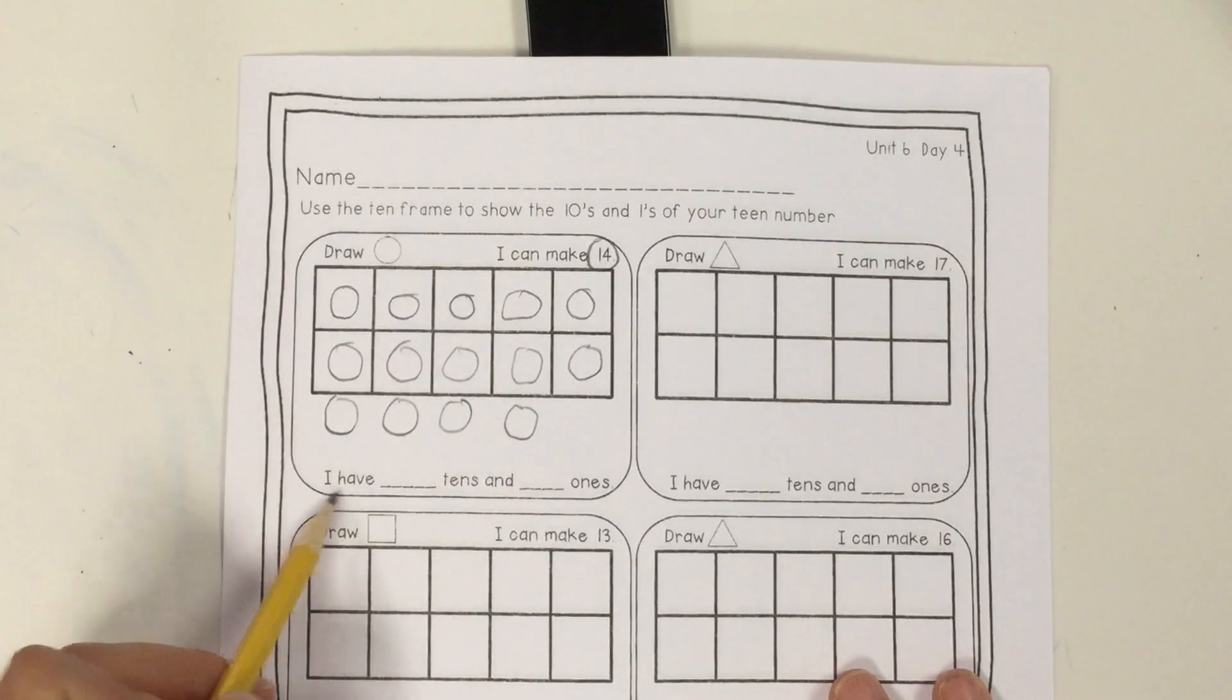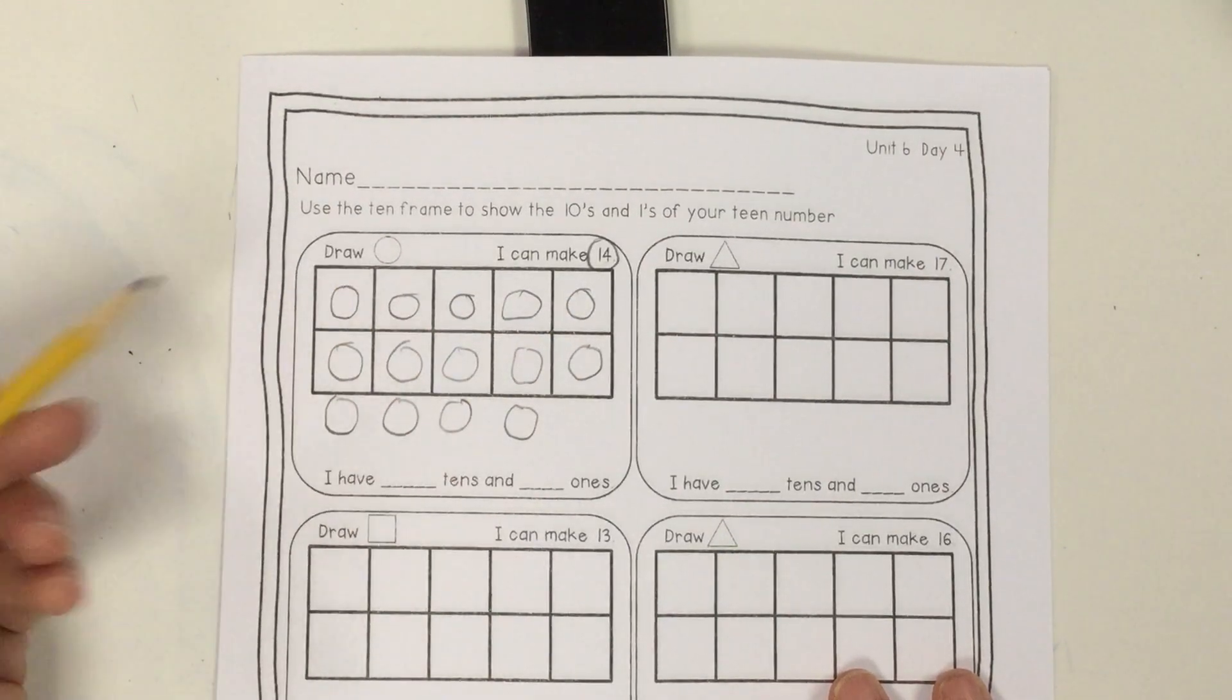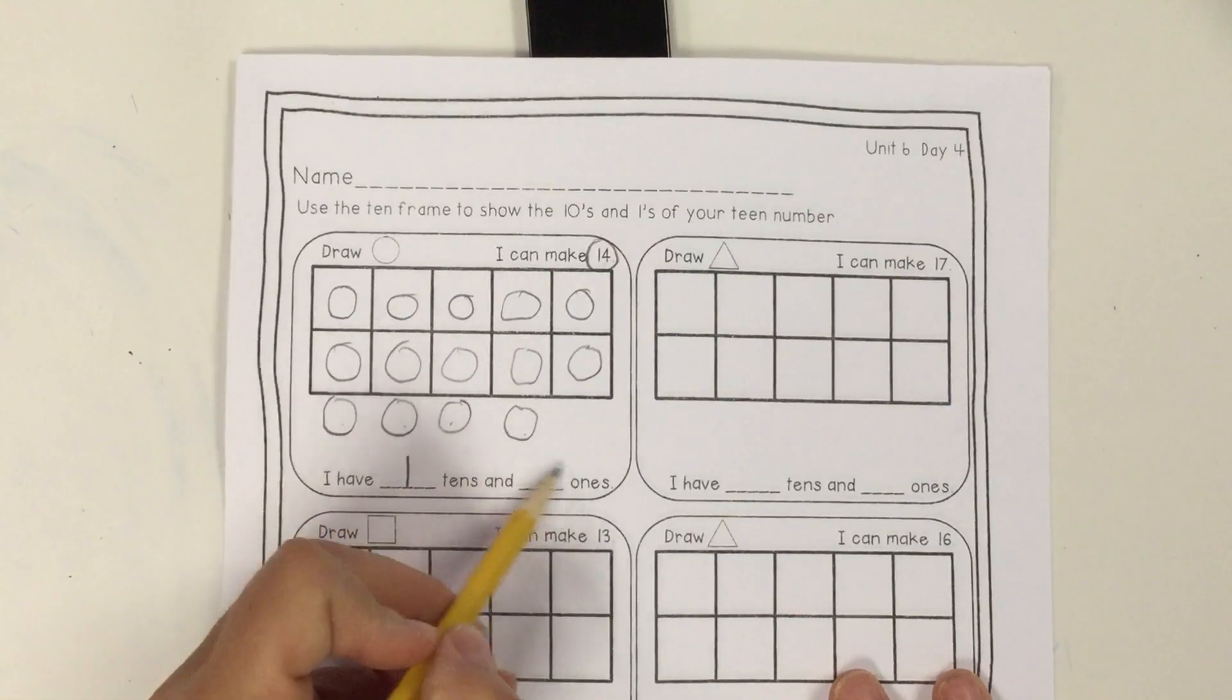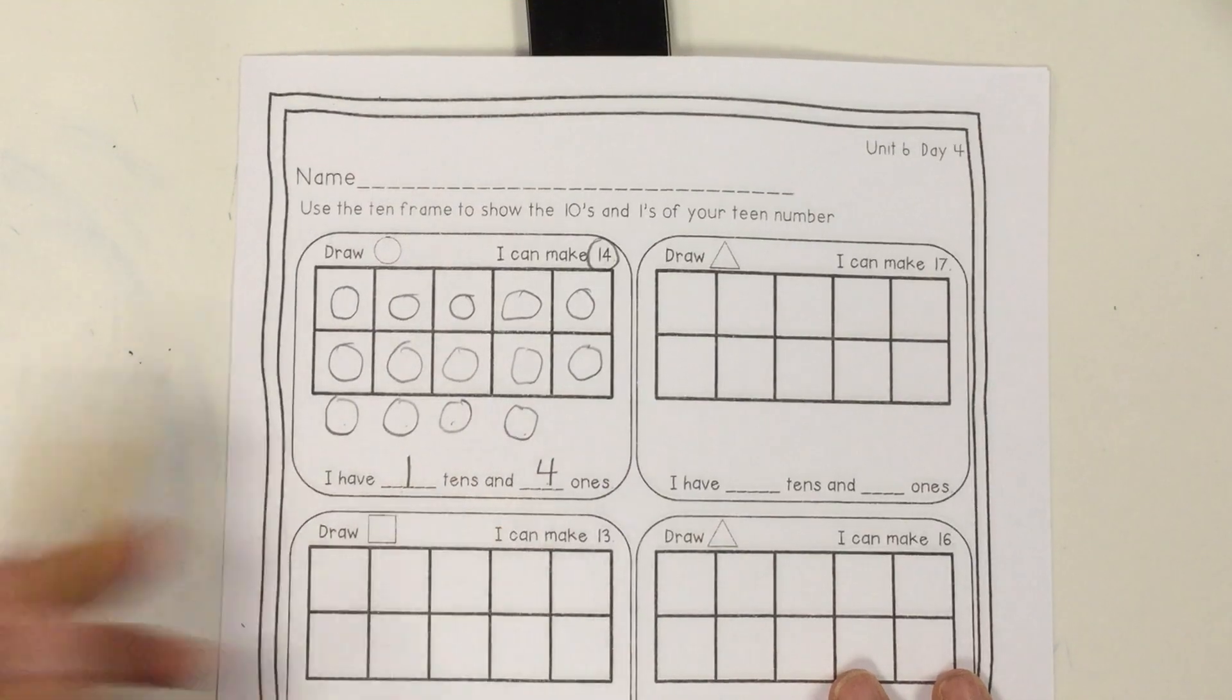Okay, it says, I have blank tens. So I have one 10 frame full. So it's one ten. And then I have 1, 2, 3, 4 ones. So 1 ten, 4 ones.